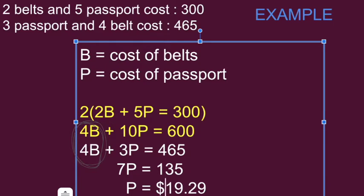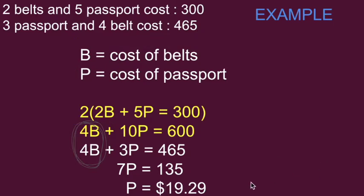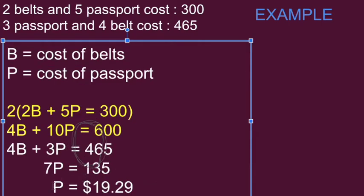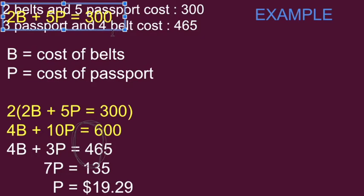But this method takes a little longer to get my second variable value. So I know what a passport costs now. I need to pick one of these equations from above. I'm going to choose this one only because it's got the smallest numbers in it.